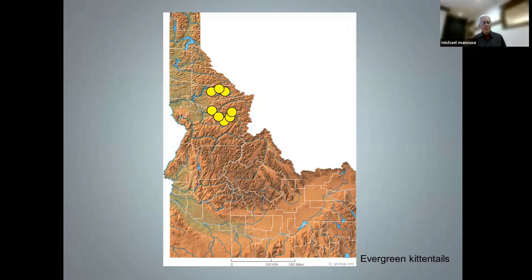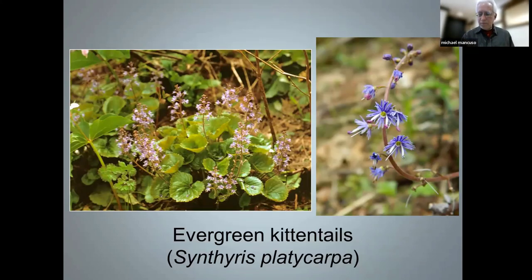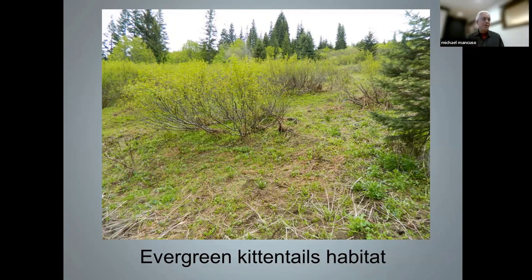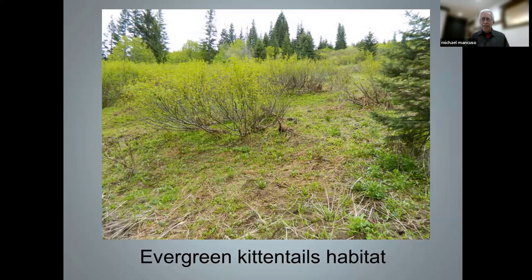This plant is endemic to the Clearwater Mountains in north central Idaho. Its habitat is really part of what's called the Grand Fir Mosaic — a habitat where Grand Fir is the dominant conifer, with natural openings of various sizes dispersed in the forest canopy. Bracken fern, Sitka alder, and fool's huckleberry are some of the common species in those openings.